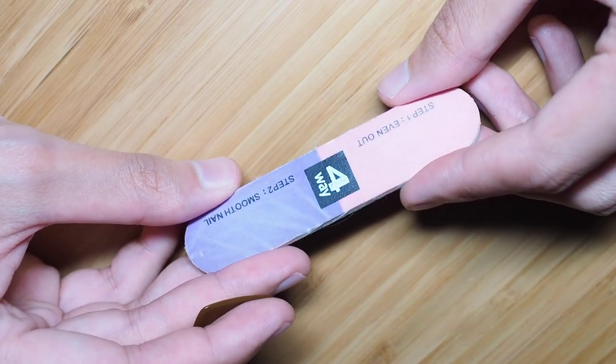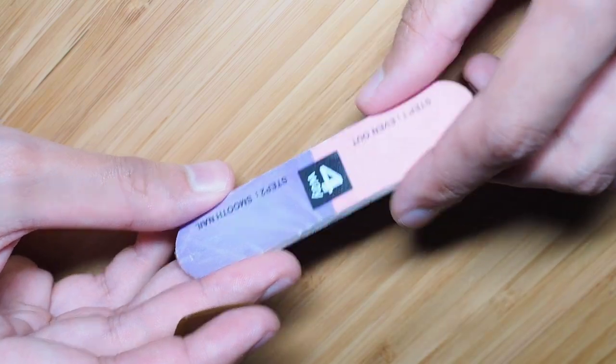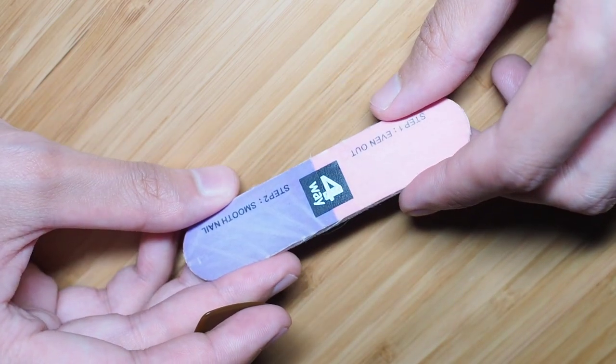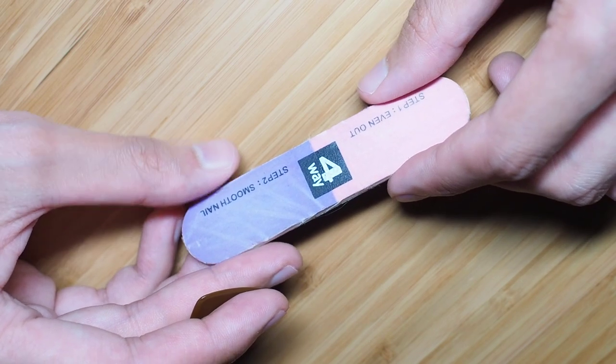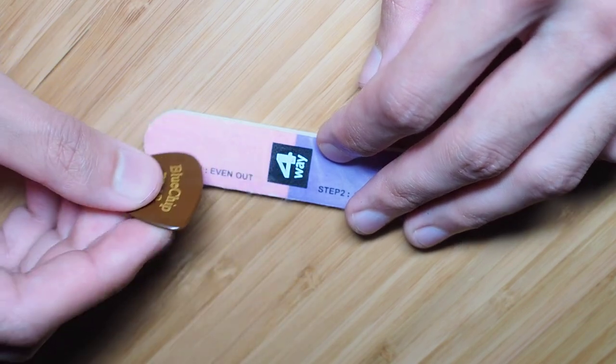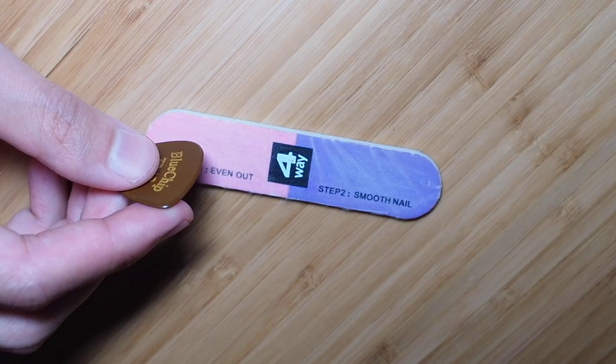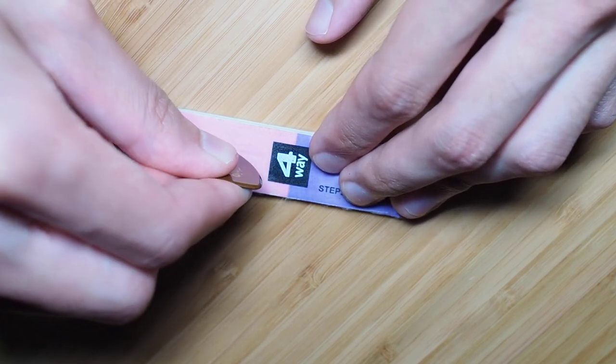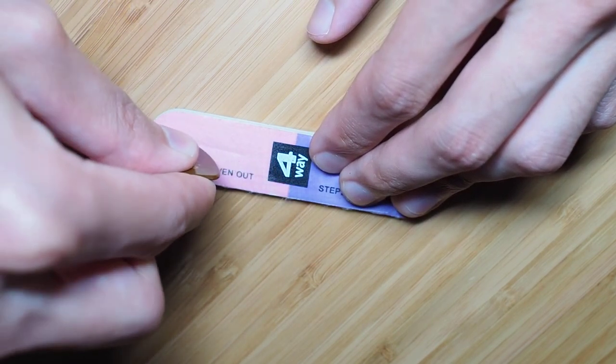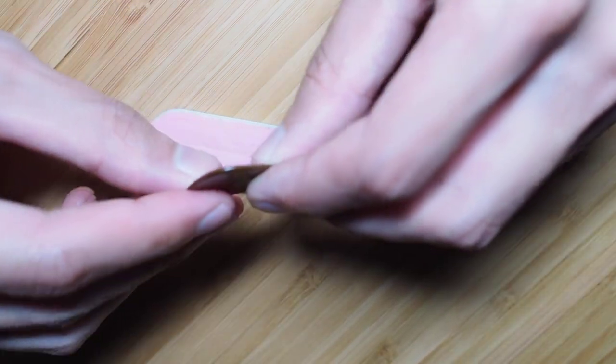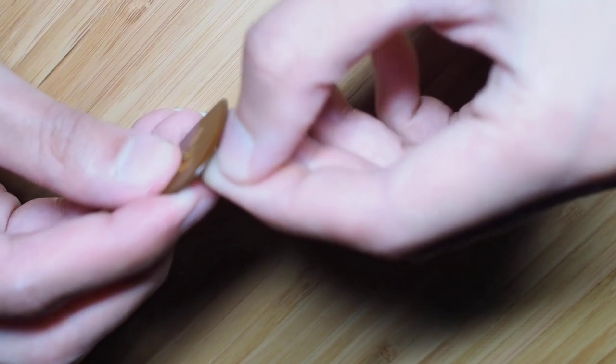There are ones that have like eight different sides, but I think four is probably the optimal. Okay, so you start out over here. You just take your pick and make sure this is focused. And you basically just go like this until you feel that the edge is evened out.